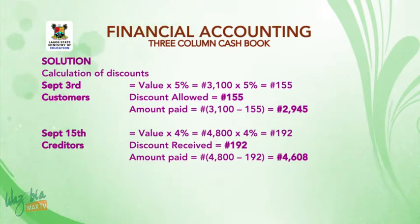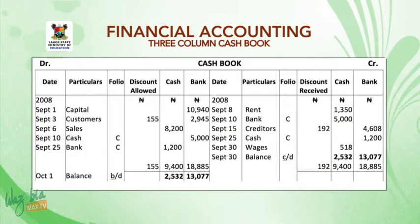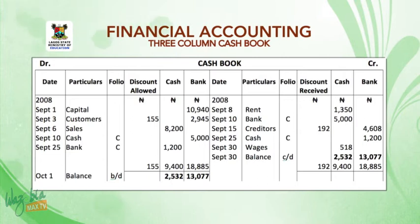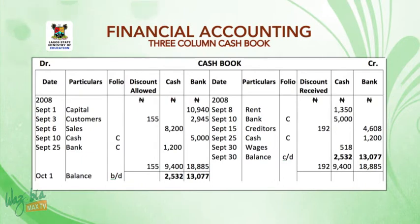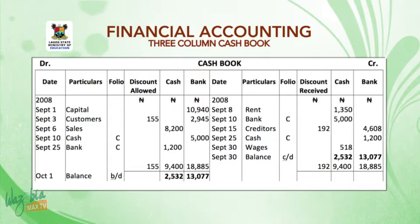Now you make the posting. First, you make the T format — debit side, credit side — put cash book as the label, and you have your six columns on each side. Label them: date, particulars, folio, discount allowed, cash, bank on the debit side; and date, particulars, folio, discount received, cash, and bank on the credit side. Under the date column on both sides put 2008, and under discount, cash, and bank on both sides put the Naira symbol.